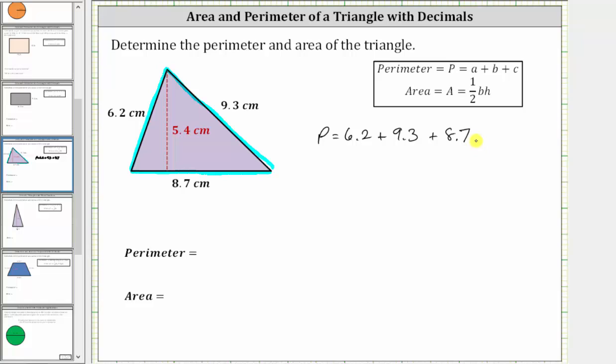Because we have decimals, let's determine the sum vertically, lining up the corresponding place values. We have 6.2 plus 9.3 plus 8.7.